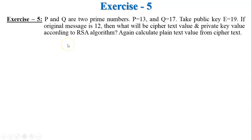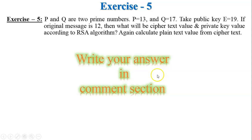Write your answer in the comment section. Exercise number five, the last exercise: p equals 13, q equals 17, public key e equals 19. If the original message is 12, find the ciphertext and private key value, then calculate the plaintext from the ciphertext. Write your answer in the comment section — I will evaluate your answers as true or false.